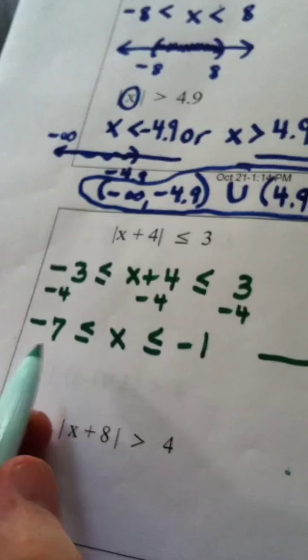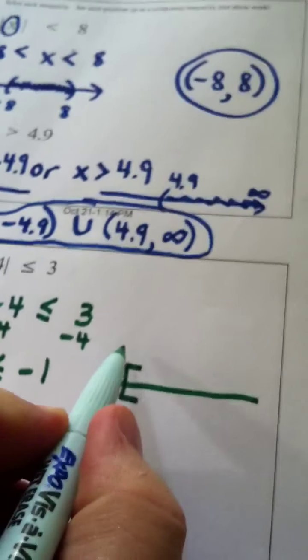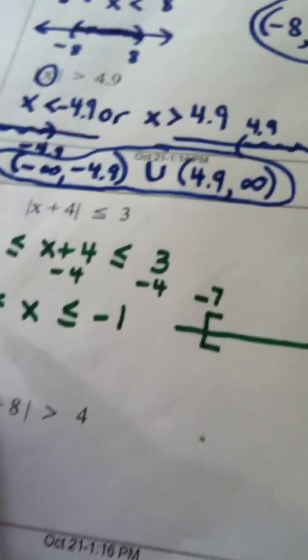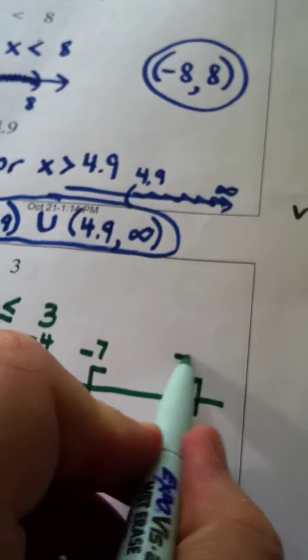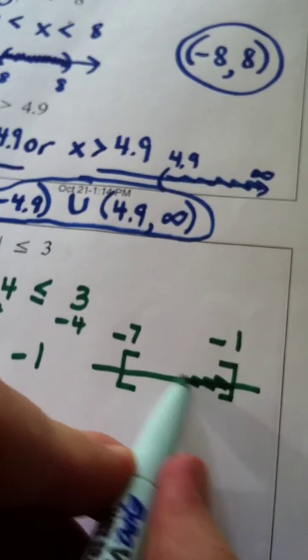And if I drew that on a number line, before I wrote the answer in interval notation, these are all real numbers sandwiched between negative 7, so I use a bracket because it is included, right, the equals. I use a negative 1 with a bracket, and everything in the middle.